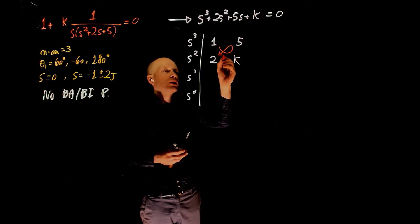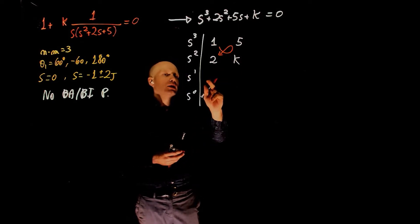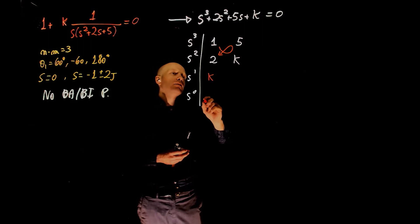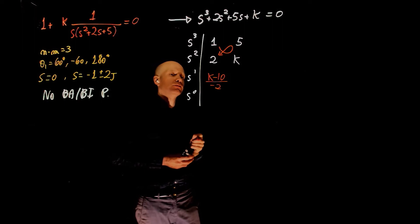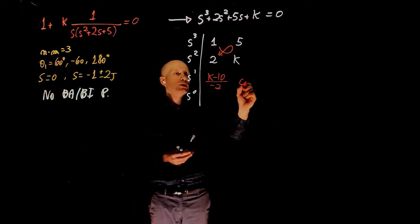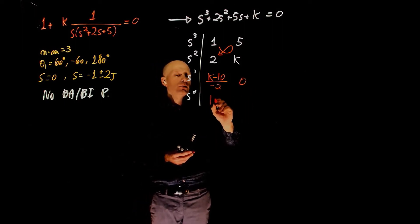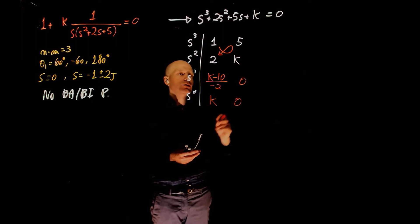Now we can do a cross-multiplication here to find the value of this element. This will be k minus 10 divided by negative 2. The value here is 0. The value here will be k, and here we have 0.